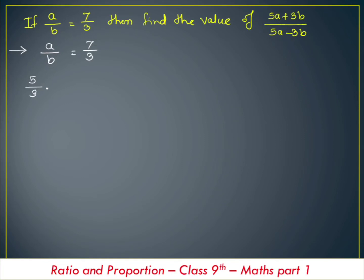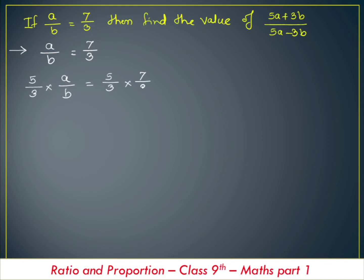So we have to multiply a divided by b by 5 by 3, so as to get 5 into a that is 5a, and 3 into b that is 3b. So 5 divided by 3 into 7 divided by 3 gives us 5a divided by 3b is equal to 5 into 7 that is 35 divided by 3 into 3 that is 9. So the value of 5a divided by 3b is equal to 35 divided by 9.